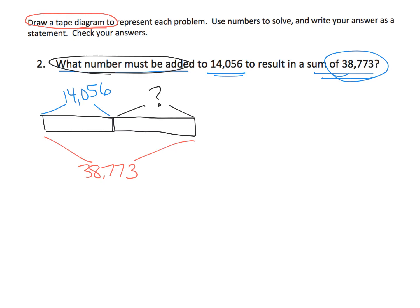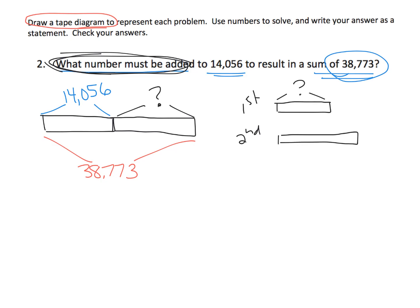Another way to draw it is stacked — one bar labeled 'first' and one labeled 'second.' We don't know the first number, so that's our unknown. The second number is 14,056, and the entire length is 38,773. So we have two styles: I call the first one 'side by side' and the second one 'stacked.' It doesn't matter which tape diagram your students prefer — they both work, though sometimes some questions lend themselves better to one style.